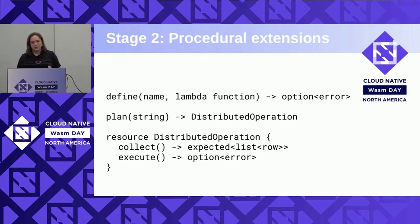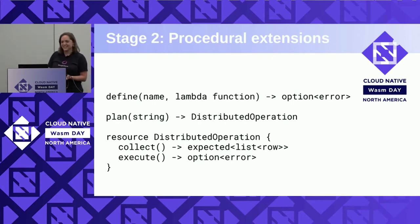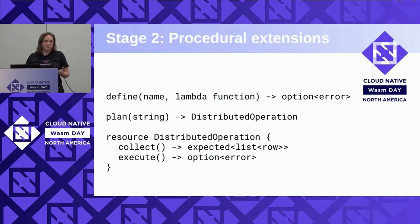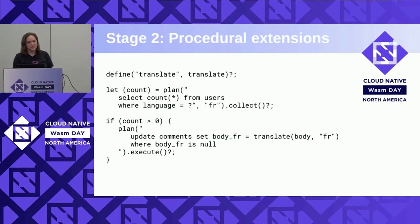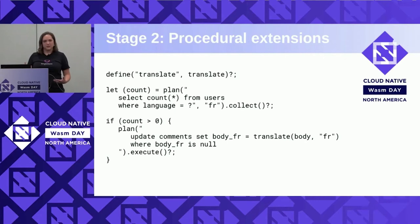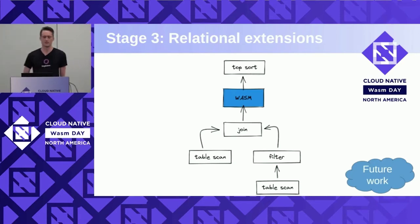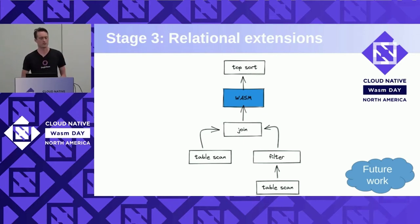That was really simple — basically value in, value out. But we also want to be able to define procedures, which means creating distributed algorithms in a multi-stage way. We need to define functions and create a plan — we're just passing in a string right now. Our plan string is like a SQL query for SingleStore, but could also be a MongoDB query. For example, using the translate example: we check whether we have any users with a French language preference, and if so, update the comments so that they're in French. That's the idea of a simple algorithm defining a procedural set of steps in WASM.